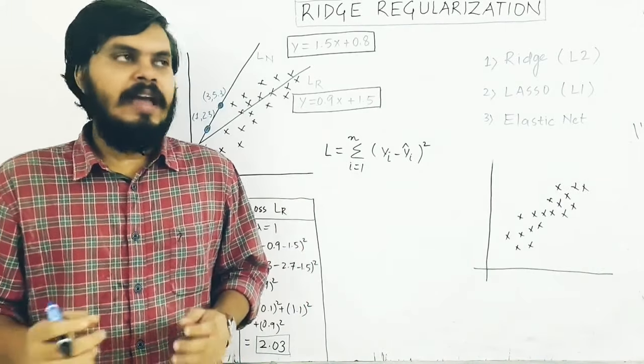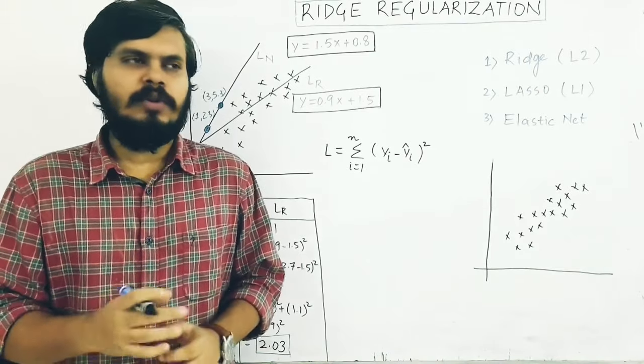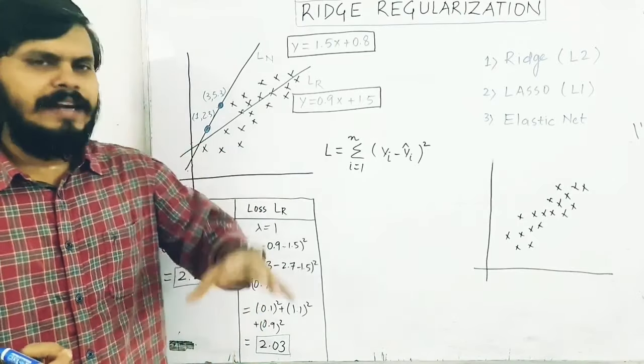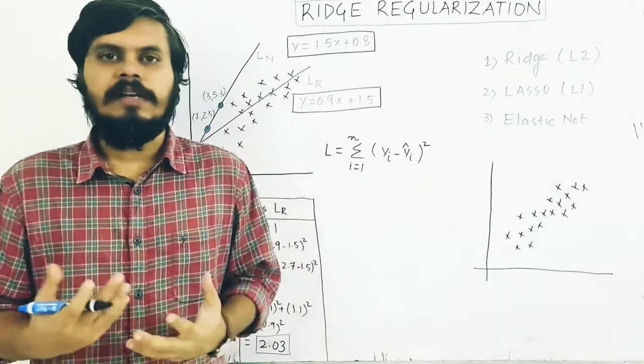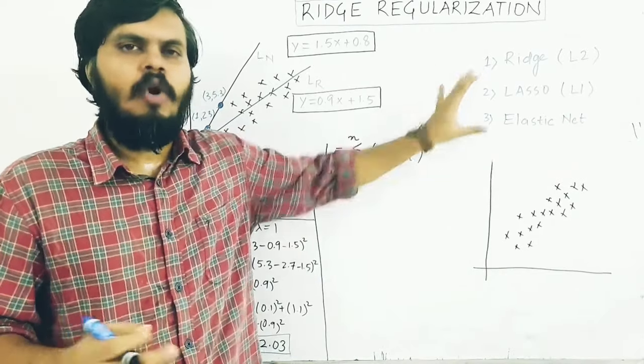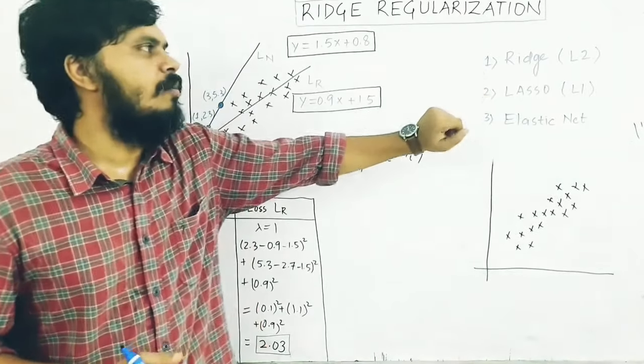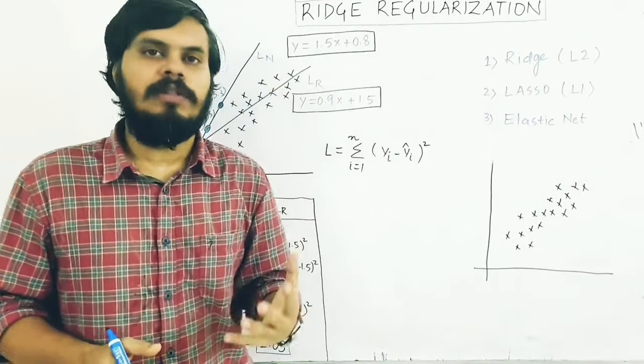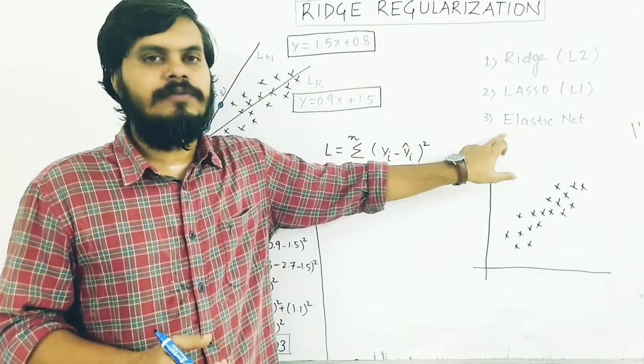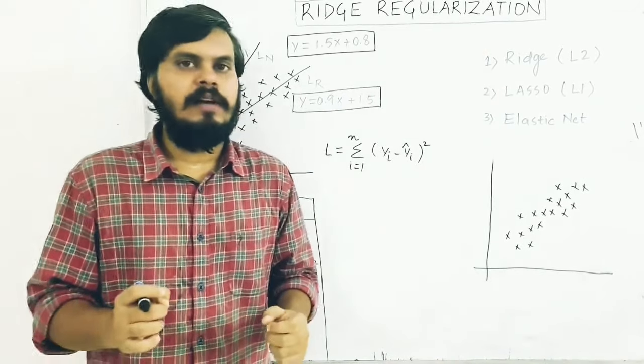Before getting into the video, I would like to tell you there are three kinds of regularization techniques available. The first one is Ridge regularization, called L2 regularization. The second one is Lasso, called L1 regularization. And the third one is Elastic Net, which is basically a combination of Ridge plus Lasso. This video we are going to do Ridge regularization.